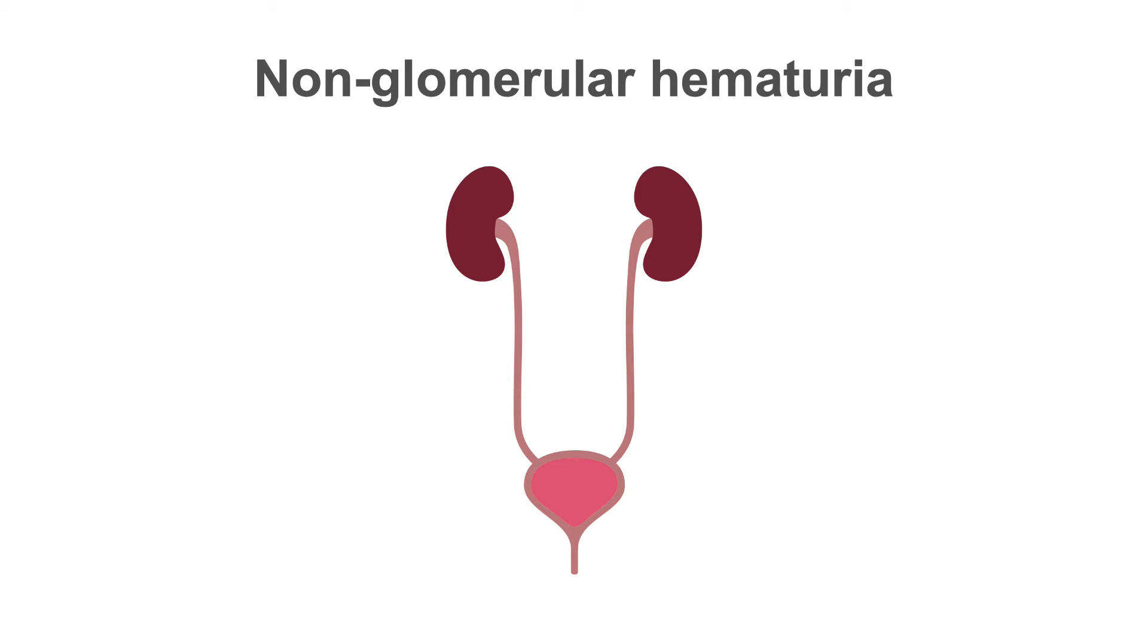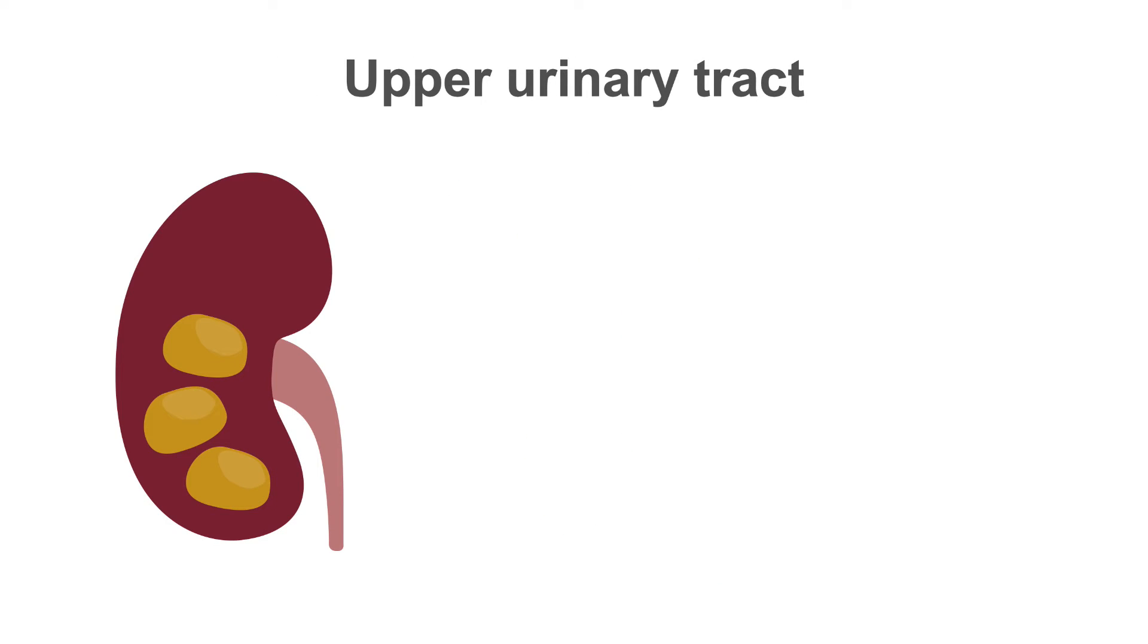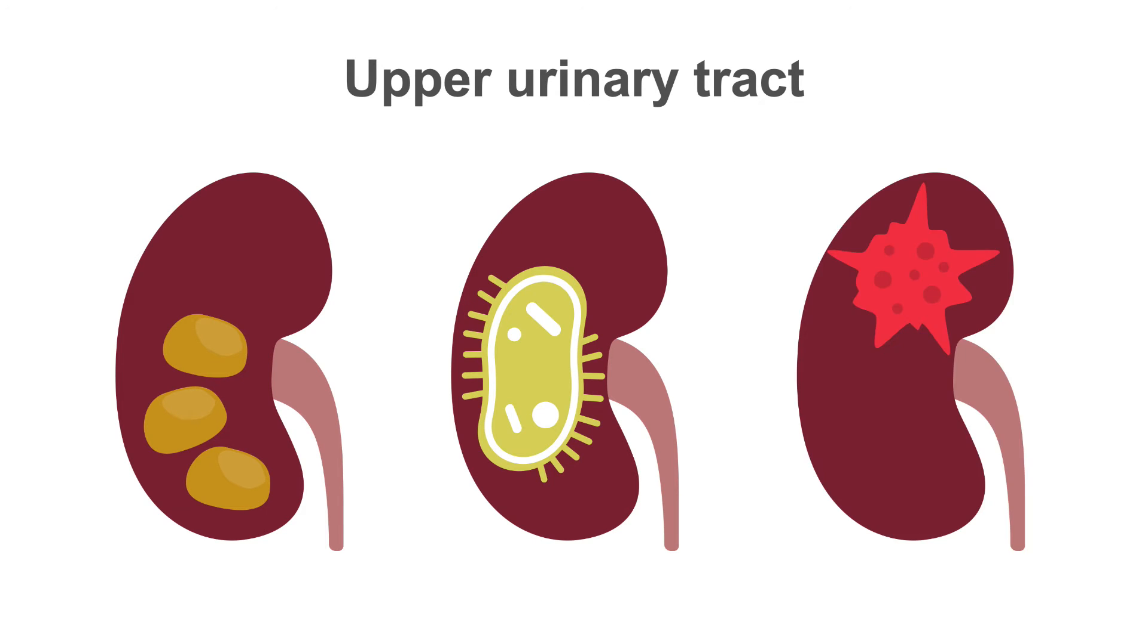Non-glomerular causes of hematuria may come from the upper urinary tract or the lower urinary tract. Examples of hematuria from the upper urinary tract include renal stones, pyelonephritis and tumors of the kidney.